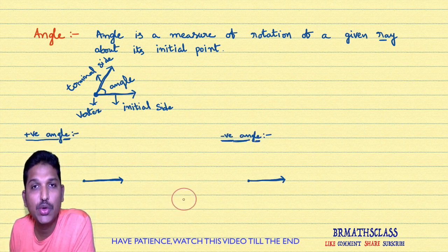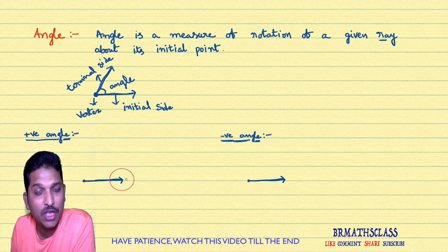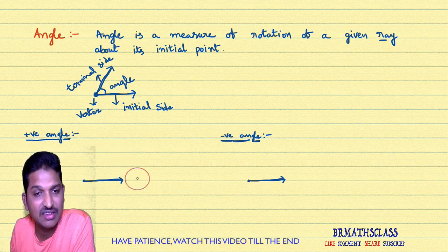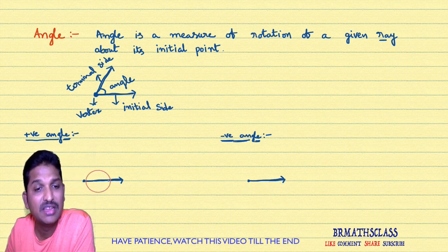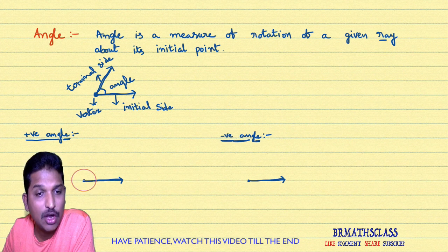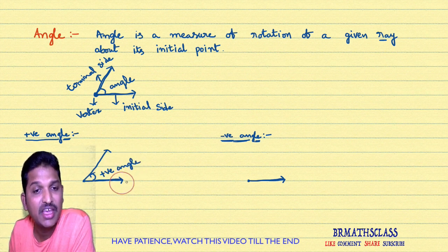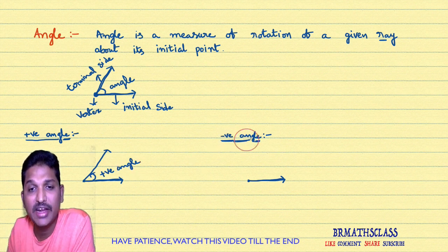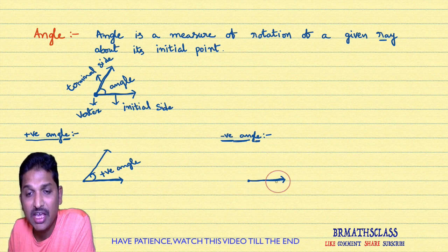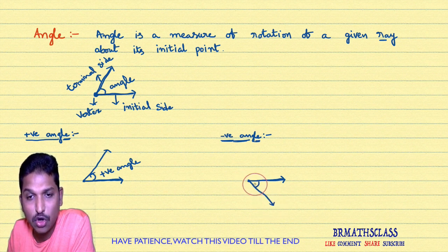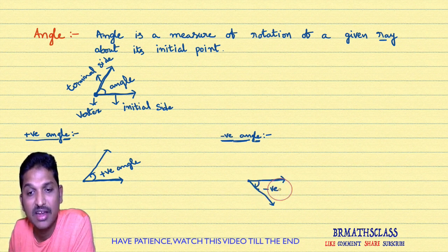Now we will learn about positive angle and negative angle. Consider a ray. This ray can be rotated in two directions. One is anti-clockwise direction, another one is clockwise direction. If we rotate this ray in anti-clockwise direction, then whatever angle is formed, that angle is known as positive angle. If we rotate this initial ray in clockwise direction, then whatever angle is formed, that angle is known as negative angle.